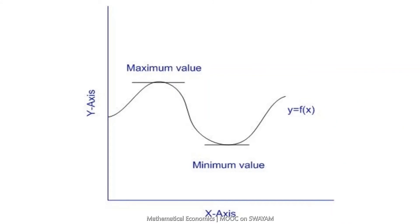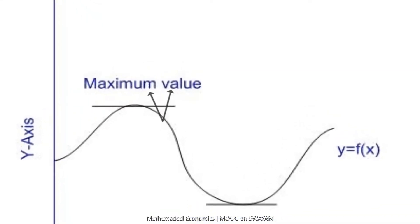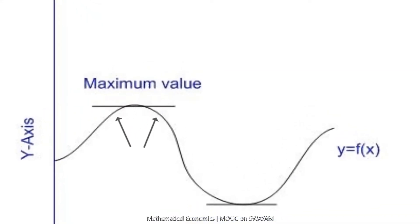Now observe the curve closely. The second observation is that immediately before attaining a maximum value, the curve increases at a decreasing rate and immediately after attaining a maximum value, the curve decreases at a decreasing rate.